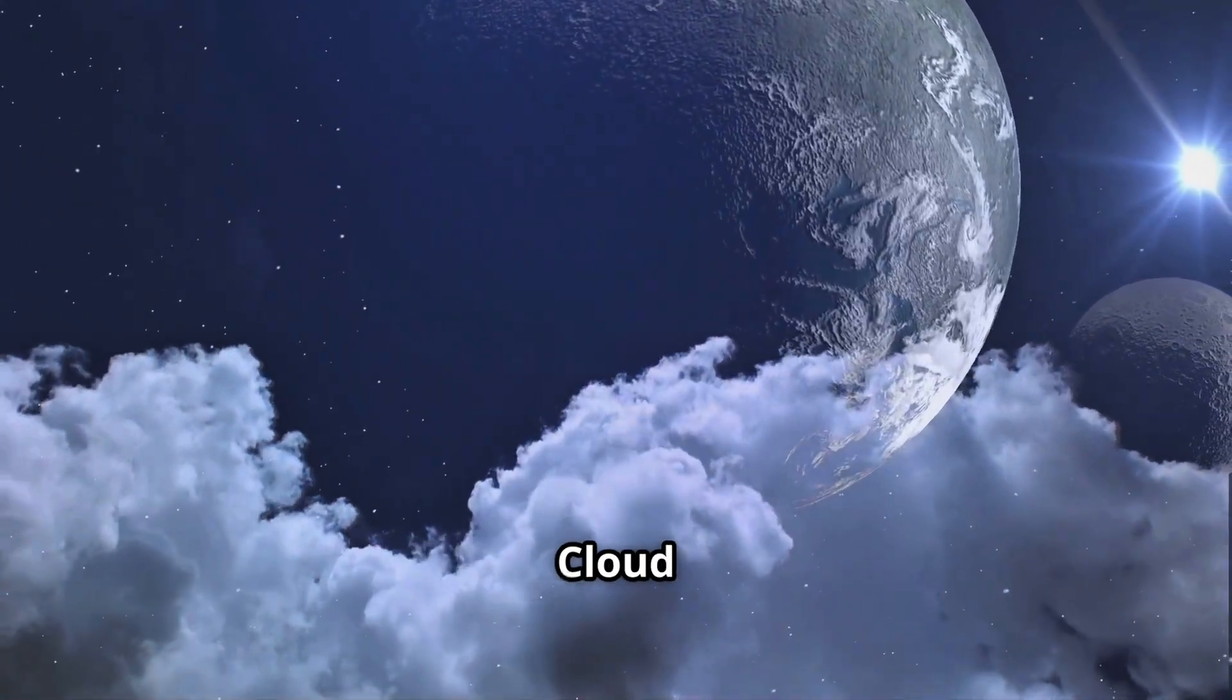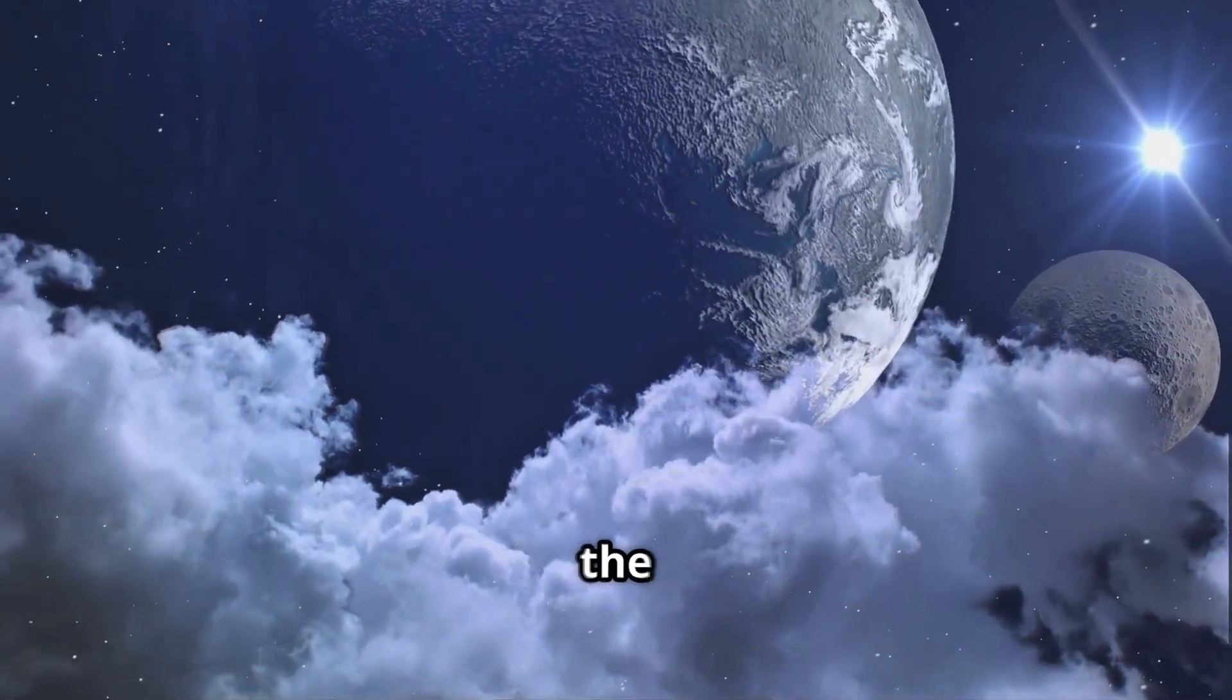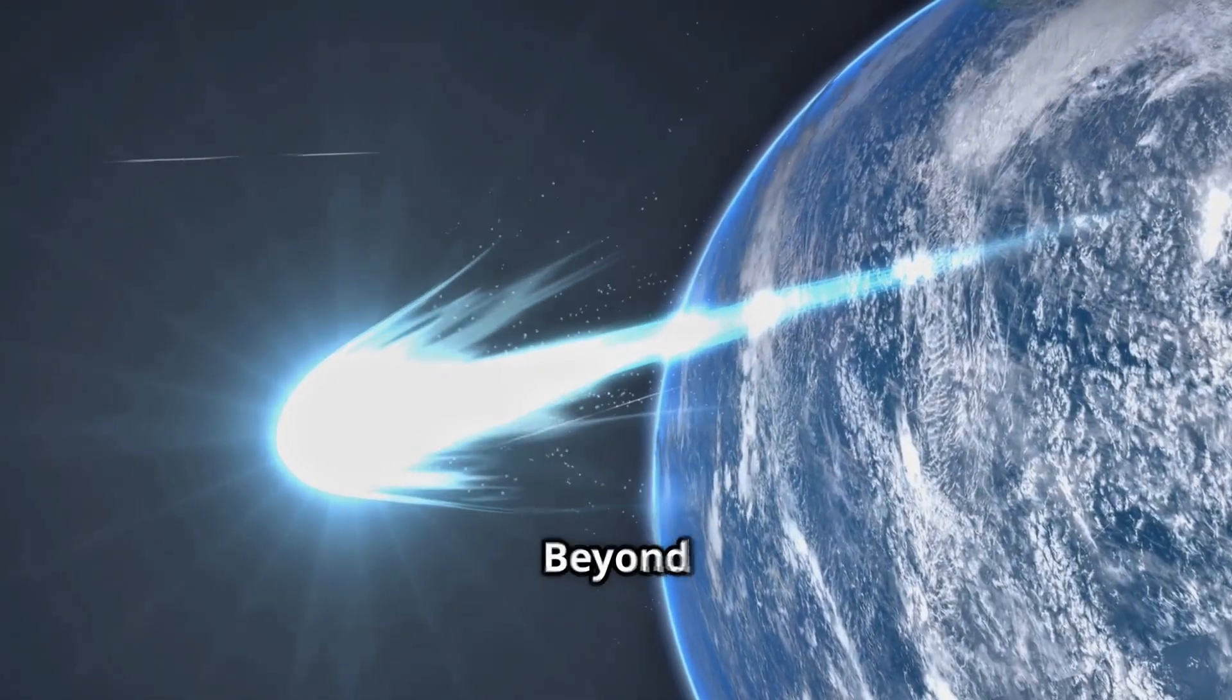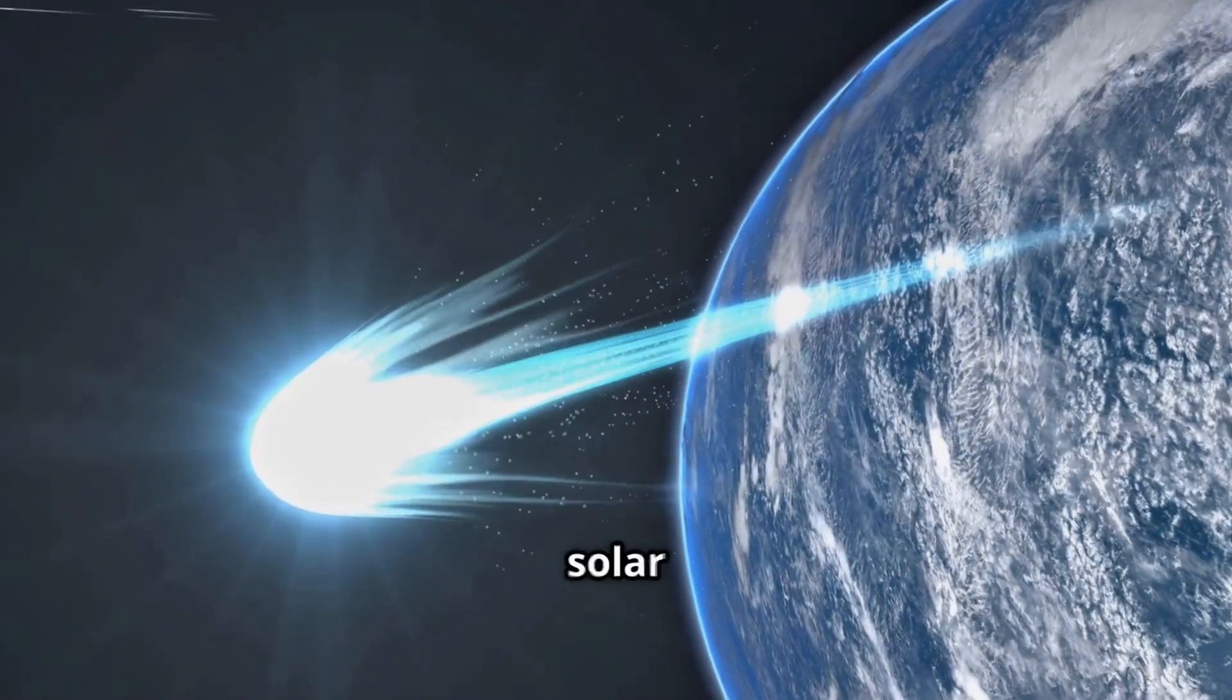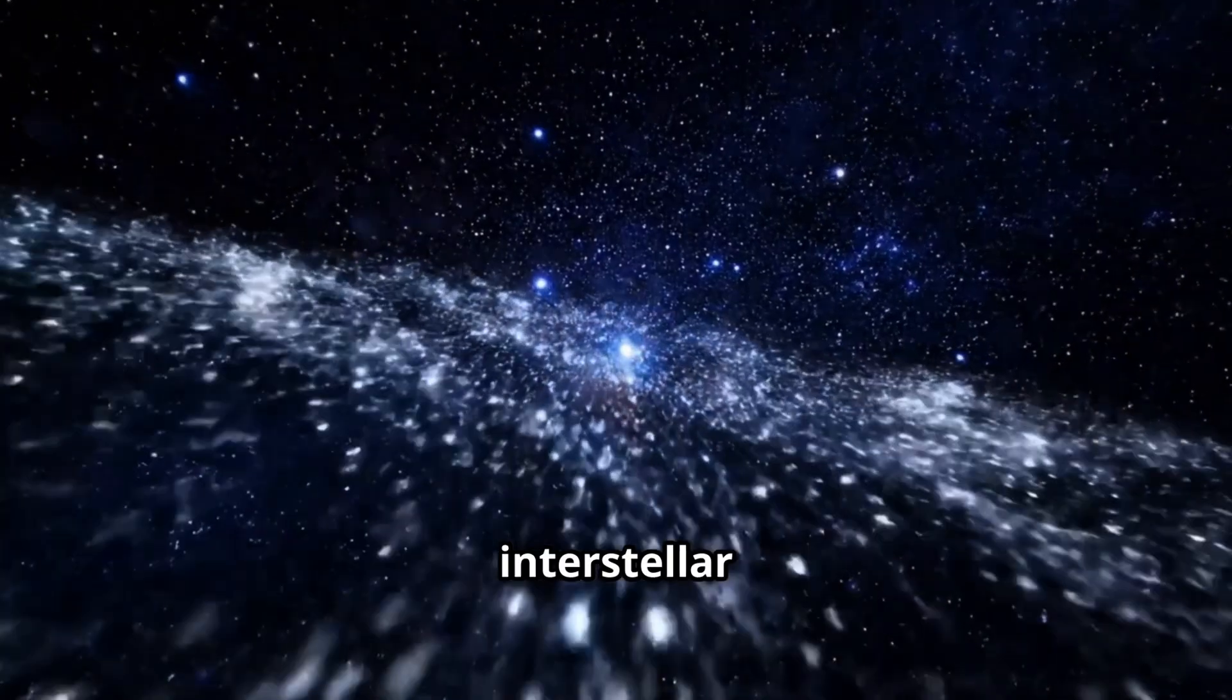Past the icy Oort cloud, a frozen shell marking the edge of our sun's reach. Beyond here, gravity loosens its grip, and the solar system fades into interstellar darkness.